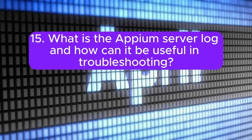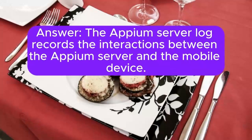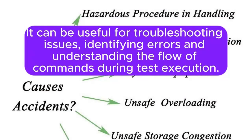15. What is the Appium Server Log and how can it be useful in troubleshooting? The Appium Server Log records the interactions between the Appium server and the mobile device. It can be useful for troubleshooting issues, identifying errors, and understanding the flow of commands during test execution.